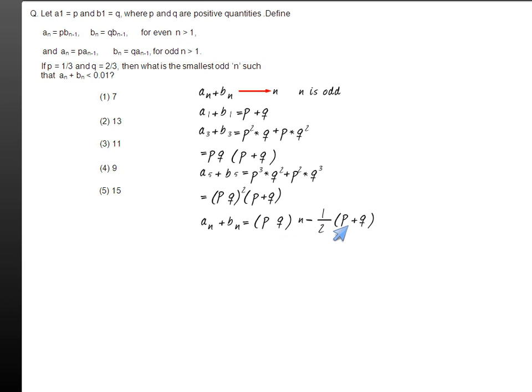Now we have been given in this question that p is equal to 1 by 3 and q is equal to 2 by 3. So we want to find out a_n plus b_n equals pq to the power of n minus 1 by 2 into 1. For what values of n will this expression be less than 1 by 100? So this is the question.